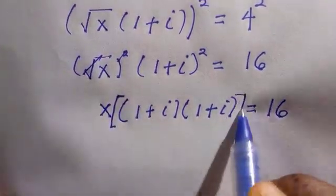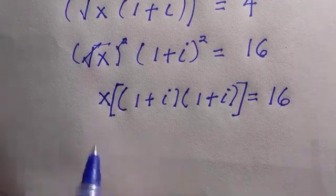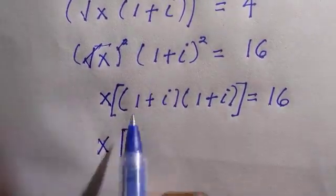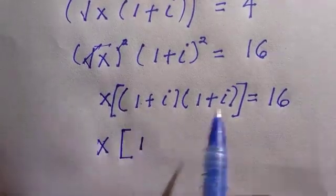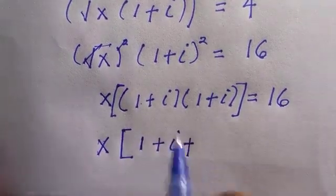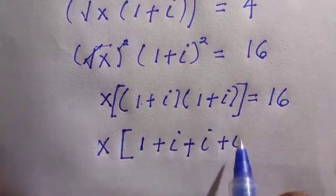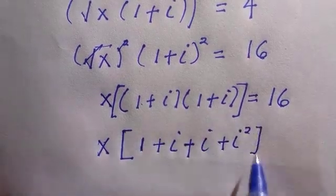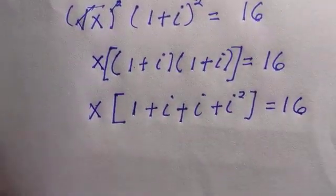So this is taking square. If I take this as a separate square just to avoid wrong multiplications, we have this as x bracket, 1 we multiply 1 and we have 1 plus 1 we multiply i we have i.